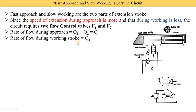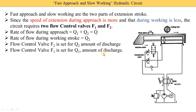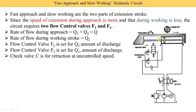Rate of flow during the working stroke is Q2 only — meaning during working, only F2 is on and F1 is closed. Flow control valve F2 is set for Q2 discharge, and F1 is set for Q1 discharge. Check valve C is used for retraction at uncontrolled speed. During retraction, oil on the left side of the piston flows through the check valve to the A-port and then to the tank. So, the deceleration valve assembly consists of flow control valves F1, F2, and check valve C.